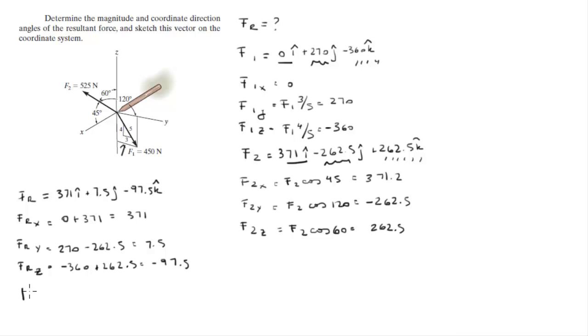Now we need to find the magnitude, and that is easily done by doing the square root of the square of the x plus the square of the y plus the square of the z component. Plug them in here and you're going to get that the magnitude is 383.86.